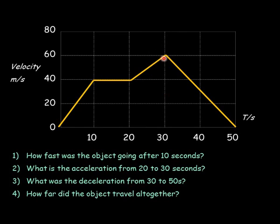What is the acceleration from 30 to 50? Change of speed goes from 60 to 0. So it's 60 metres per second change in a time of 20. So 60 divided by 20 would be 3 metres per second squared. And it might be a minus sign to show it's a deceleration.